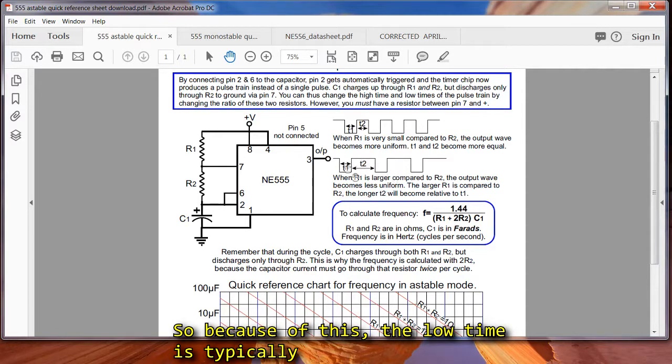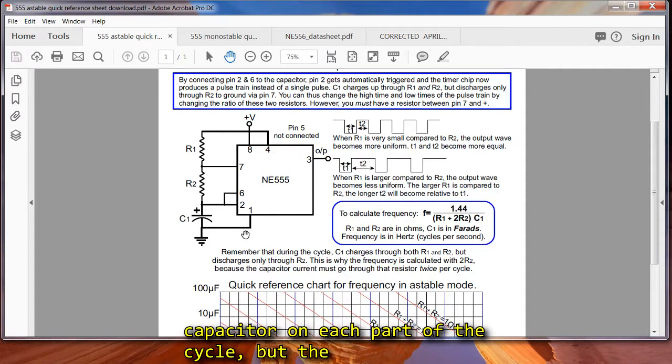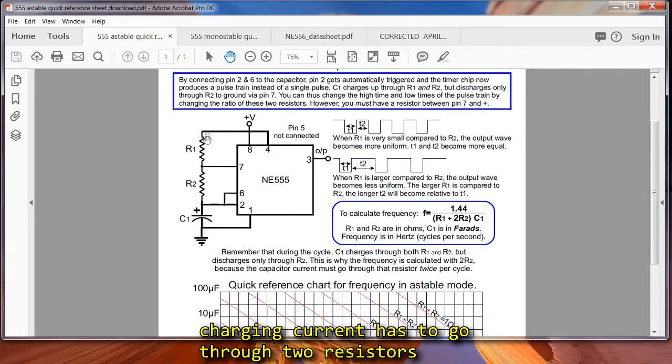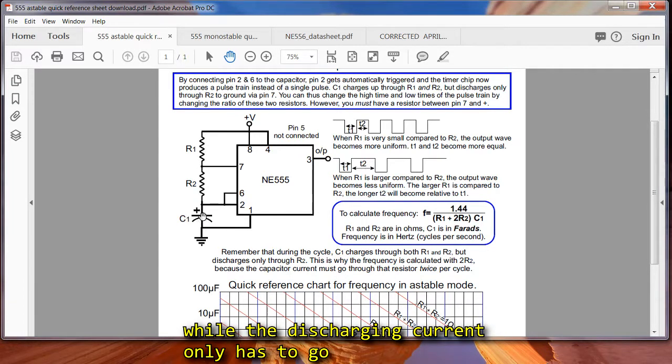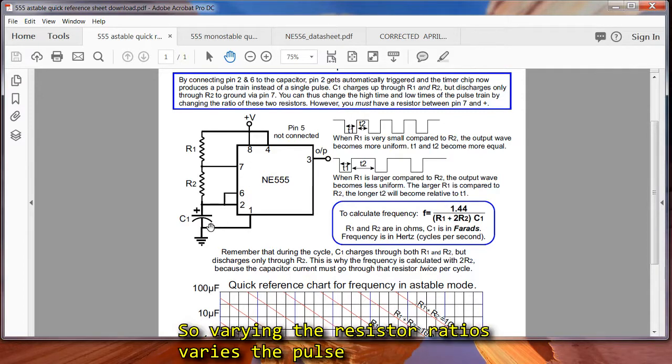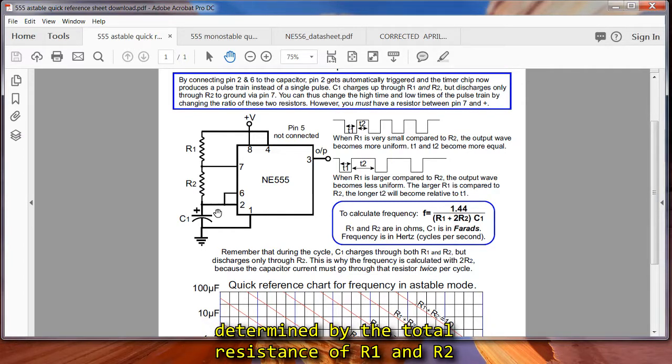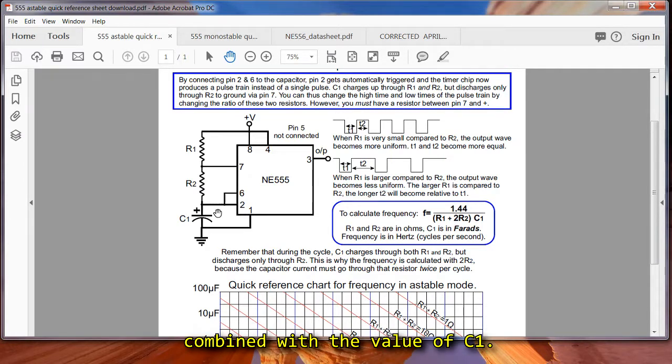So because of this, the low time is typically shorter than the high time, because it's the same capacitor on each part of the cycle, but the charging current has to go through two resistors, while the discharging current only has to go through one resistor. So varying the resistor ratios varies the pulse width, but not the frequency. The frequency is determined by the total resistance of R2 and R1 combined with the value of C1.